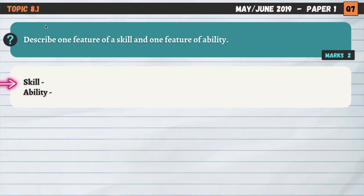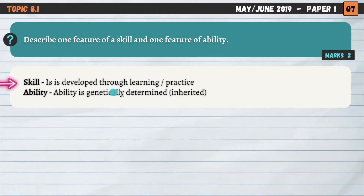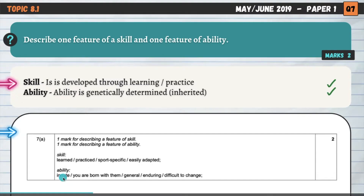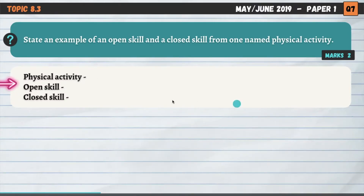Topic 8.1, skill and ability — a really simple question. Describe one feature of a skill and one feature of ability. Skill is developed through learning or practice; we need to spend a lot of time to become skilful. Whereas ability is genetically determined or inherited — it's generally regarded as being passed down from your parents. Skills can be easily adapted through practice, whereas abilities are innate, very difficult to change, and enduring.